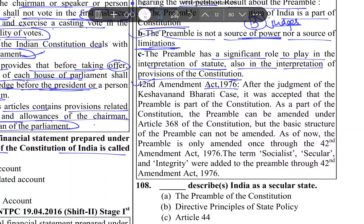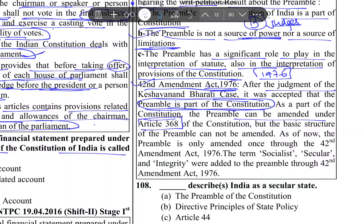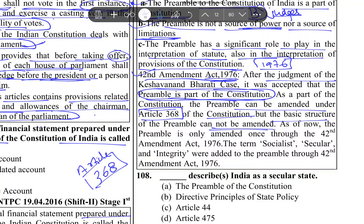The 42nd Amendment Act of 1976 — after the judgment of the Keshavananda Bharati case — accepted that the preamble is a part of the constitution. As a part of the constitution, the preamble can be amended under Article 368, but the basic structure of the preamble cannot be amended.